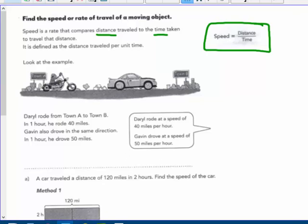Daryl rode from town A to town B. In one hour he rode 40 miles. Gavin also drove in the same direction. In one hour he drove 50 miles.